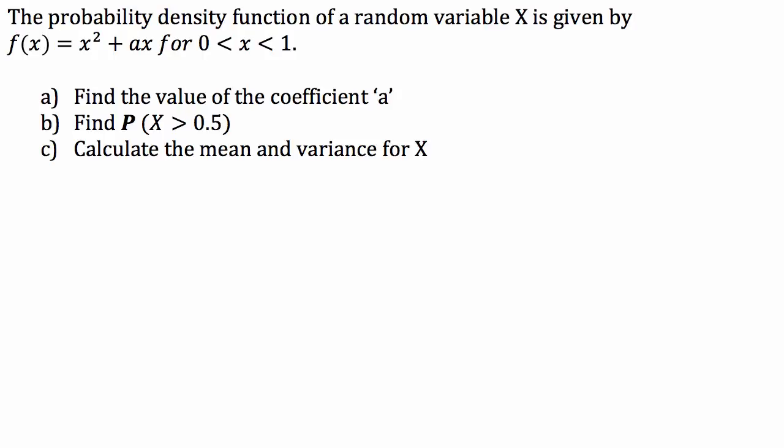G'day guys, we've got a probability question here today which involves a continuous random variable. So let's have a look at it. We've got the probability density function of a random variable x given by this function over the domain 0 to 1. What we first have to do is find the value of the coefficient a. We then have to find the probability of the random variable being greater than a half, and we also have to calculate the mean and variance for x.